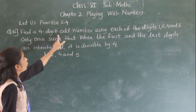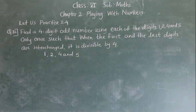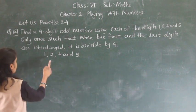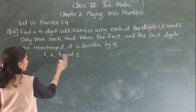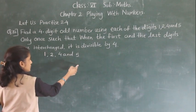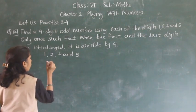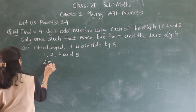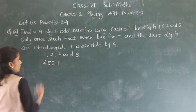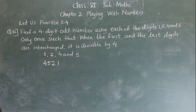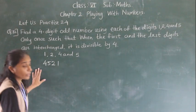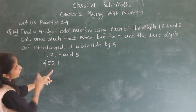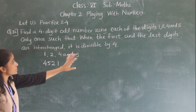Finding a 4-digit number. First, what we need to find is a 4-digit number. Suppose we keep 1 as the first place, so we will get the first place. Suppose I will write 4, 5, 2, 1. This is one arrangement. But after that, what is given: when the 1st and last digits interchange, it should be divisible by 4.